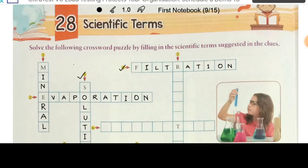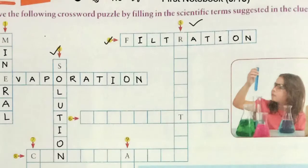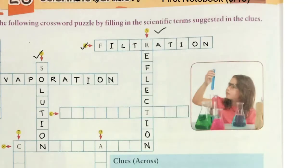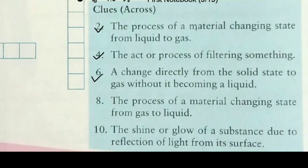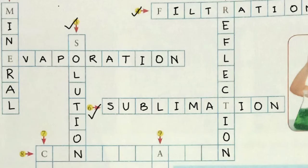Clue 5: Can you tell the scientific name for this process? Yes, you are right — it is called reflection. We write reflection here. Clue 6: A change directly from the solid state to gas without it becoming a liquid. Do you know this process? This process is known as sublimation. We write sublimation here.